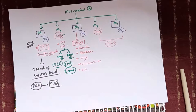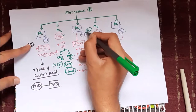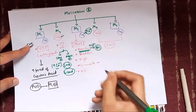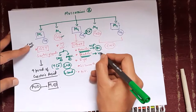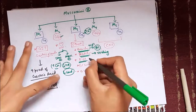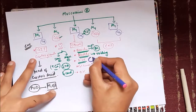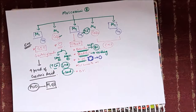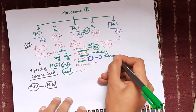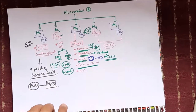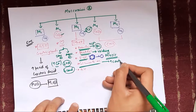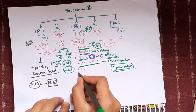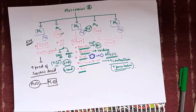M3 receptors are GQ subtype receptors that increase intracellular calcium. In the bronchi, this causes contraction of bronchial smooth muscle resulting in bronchoconstriction. In the bladder, contraction of the detrusor causes voiding of urine. In the eye, these are present in the circular muscle of the iris; contraction causes narrowing of the pupil, called miosis. In GI smooth muscle, increased contractions can predispose to diarrhea.